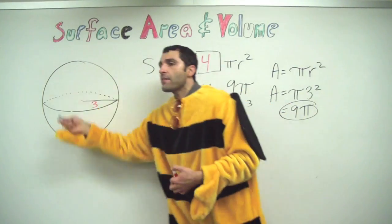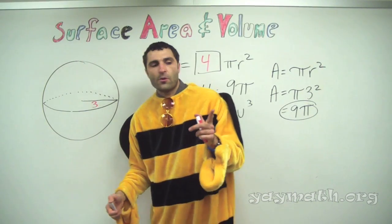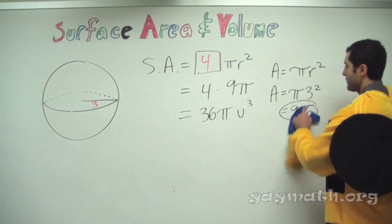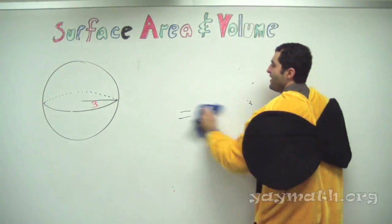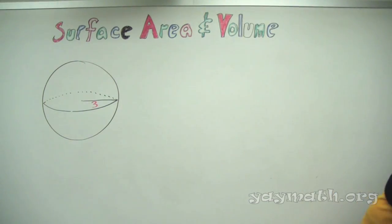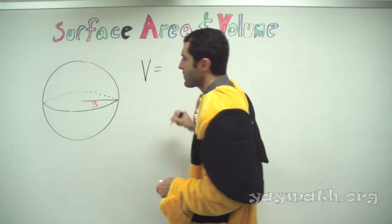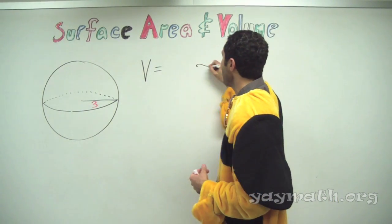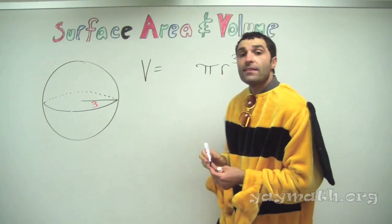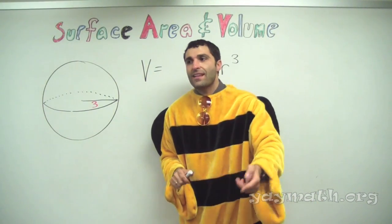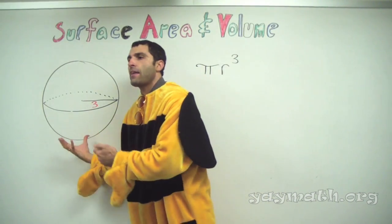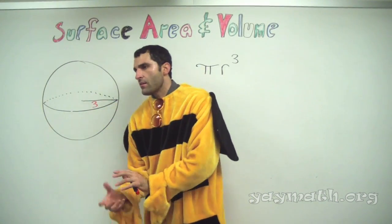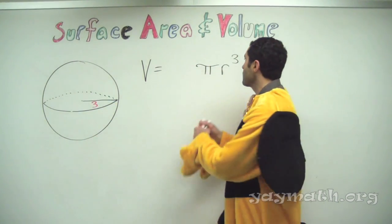Now let's do the volume of this sphere. Volume equals — this one is harder to visualize. It's how much air, or sand, or water you could fit inside the ball — that's the volume. Do you understand the difference? Surface area is the outside face; volume is the space inside.